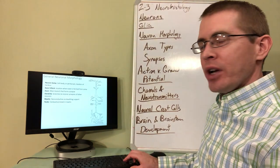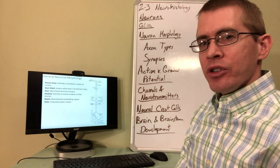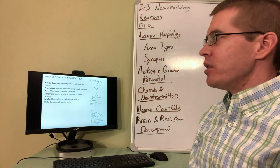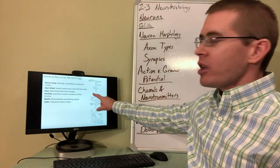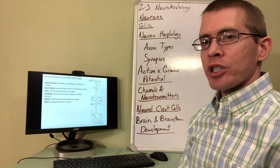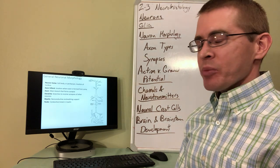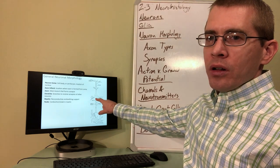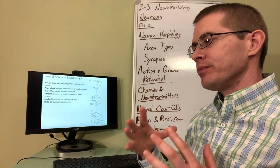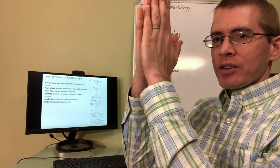Here we have a drawing of the general morphology of a neuron. The soma — also called the cell body or perikaryon — is the central portion where the nucleus is located. Branching out from that central portion are structures that form the functional elements that make neurons special. First, we identify the axon hillock, which is the zone where the cell body transitions into the axon.